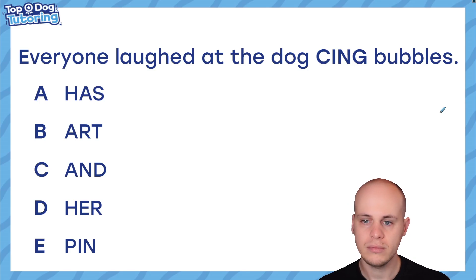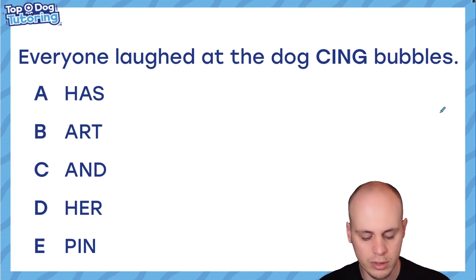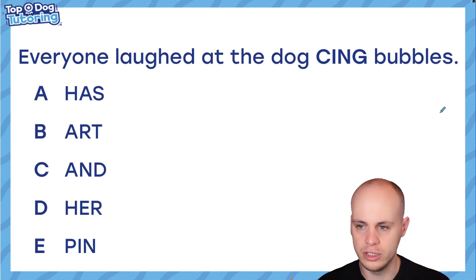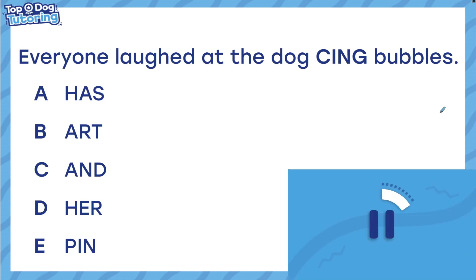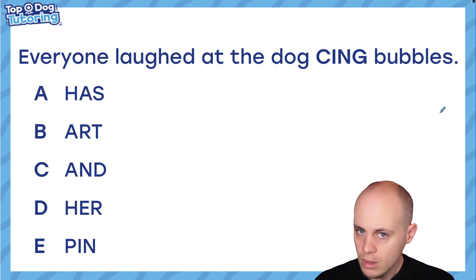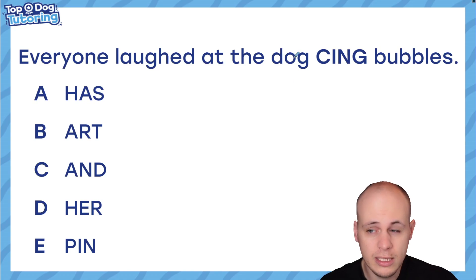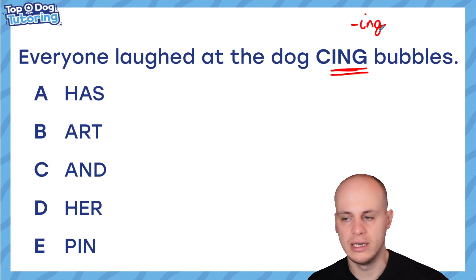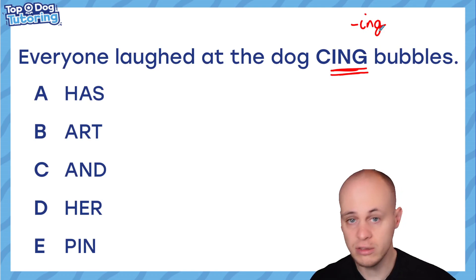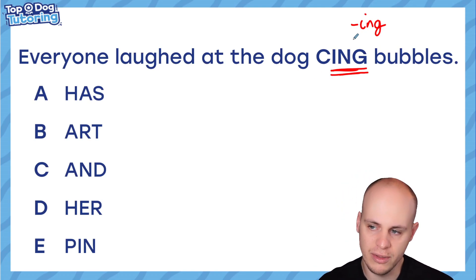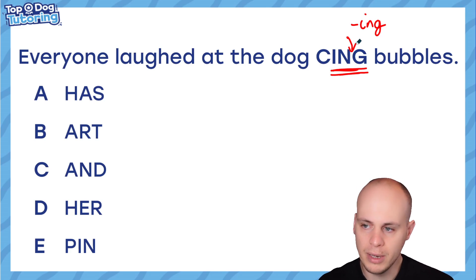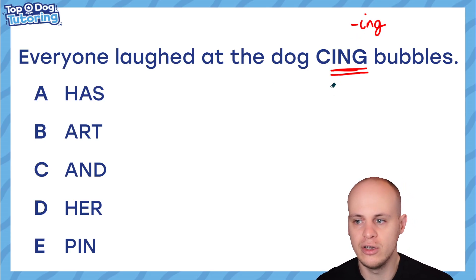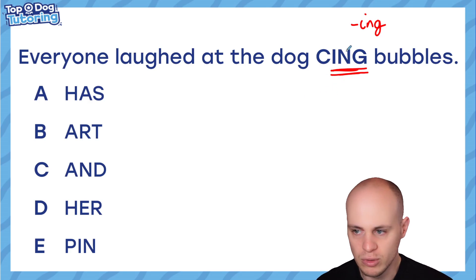Here's our next question — completely over to you, I'm not going to read it or give you any context. Pause the video and have a go. Hopefully, based on the last two examples, you're looking at this word and thinking: ING — I see this suffix all the time. It's very likely this word is going to end in ING. It's not guaranteed, but it's a very reasonable, logical place to start. So let's read the context: everyone laughed at the dog — bubbles — ING. I think it's going to be a verb, a doing word.